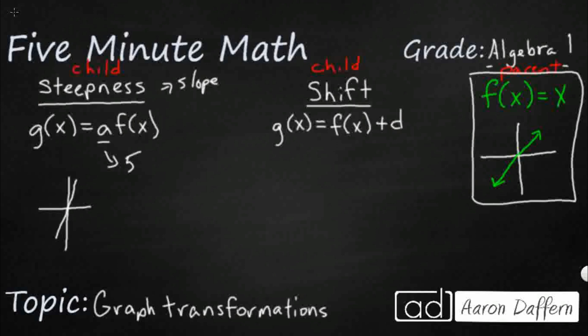I could make it a negative 5. And if I did that, now it's going to be a negative slope, and it's also going to be a lot steeper.